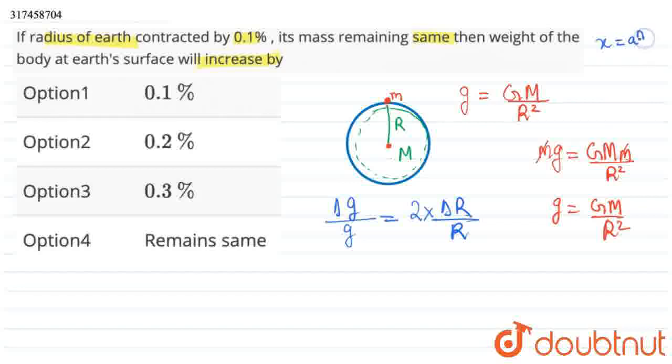As an example, if we explain the example, x is equal to a to the power n. And here, a has some error or change. Then how will we calculate change in x? Delta x divided by x equals n times delta a by a. Delta a is given to us, a is known, so delta x by x will come.